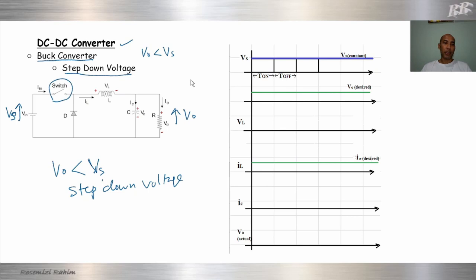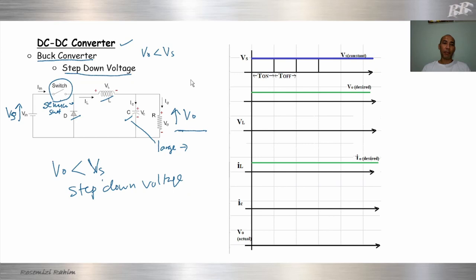The Buck Converter consists of a switch — normally we use a semiconductor switch — a freewheeling diode, and also an inductor and capacitor. The value of the capacitor is normally very large, to make sure our time constant is longer. When the time constant is long, we can reduce the ripple, and the output will be smooth and constant. Similarly for L — we need a large inductance value so we can reduce the current ripple and keep our current constant DC.